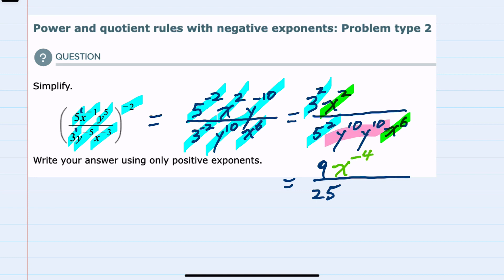And then for the y's, they're both in the denominator and they're just being multiplied. So again my rule is: when I multiply with the same base, I keep that base y in the same location and I add the exponents. 10 plus 10 would be 20.